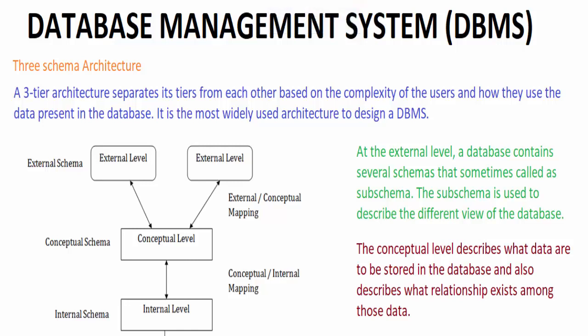Welcome everybody to DBMS. Today we will see the three schema architecture. The goal of the three schema architecture is to separate the user application and the physical database. Since many database system users are not computer trained, the developer tries to hide the complexity from the user through several levels of abstraction.